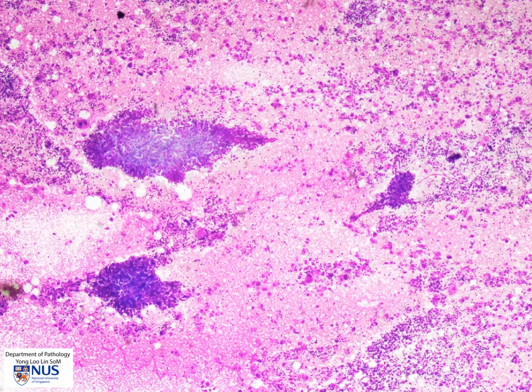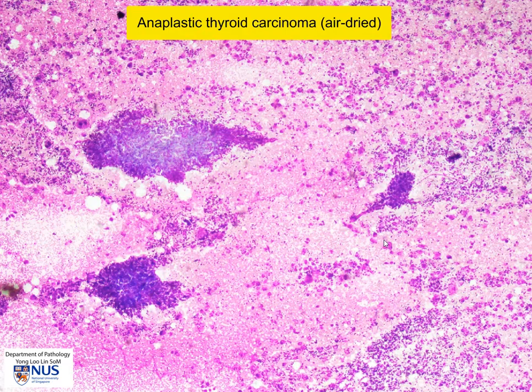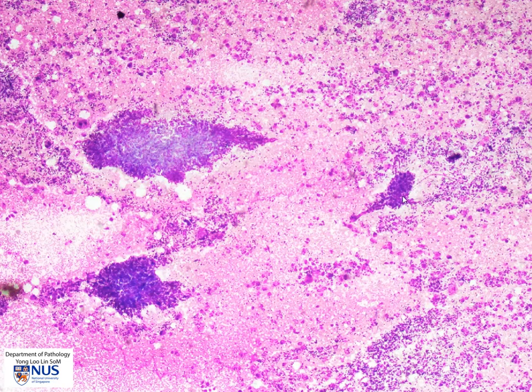This is an aspirate taken from a case of anaplastic thyroid carcinoma and we're looking at the low magnification view of the air dried smear. We can see at low magnification that there are some large, quite crowded appearing tissue fragments and at the same time there are extremely large, quite dispersed cells.